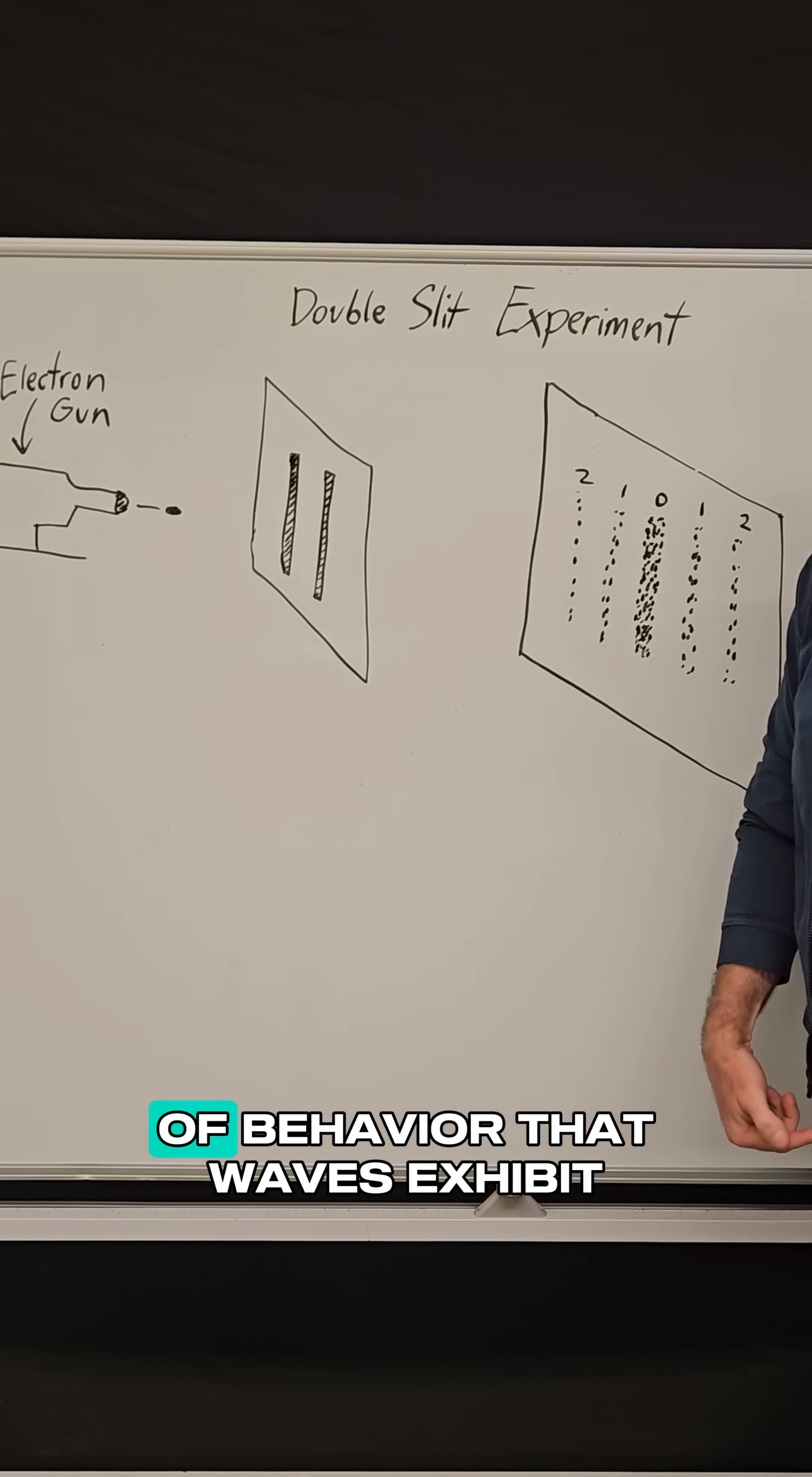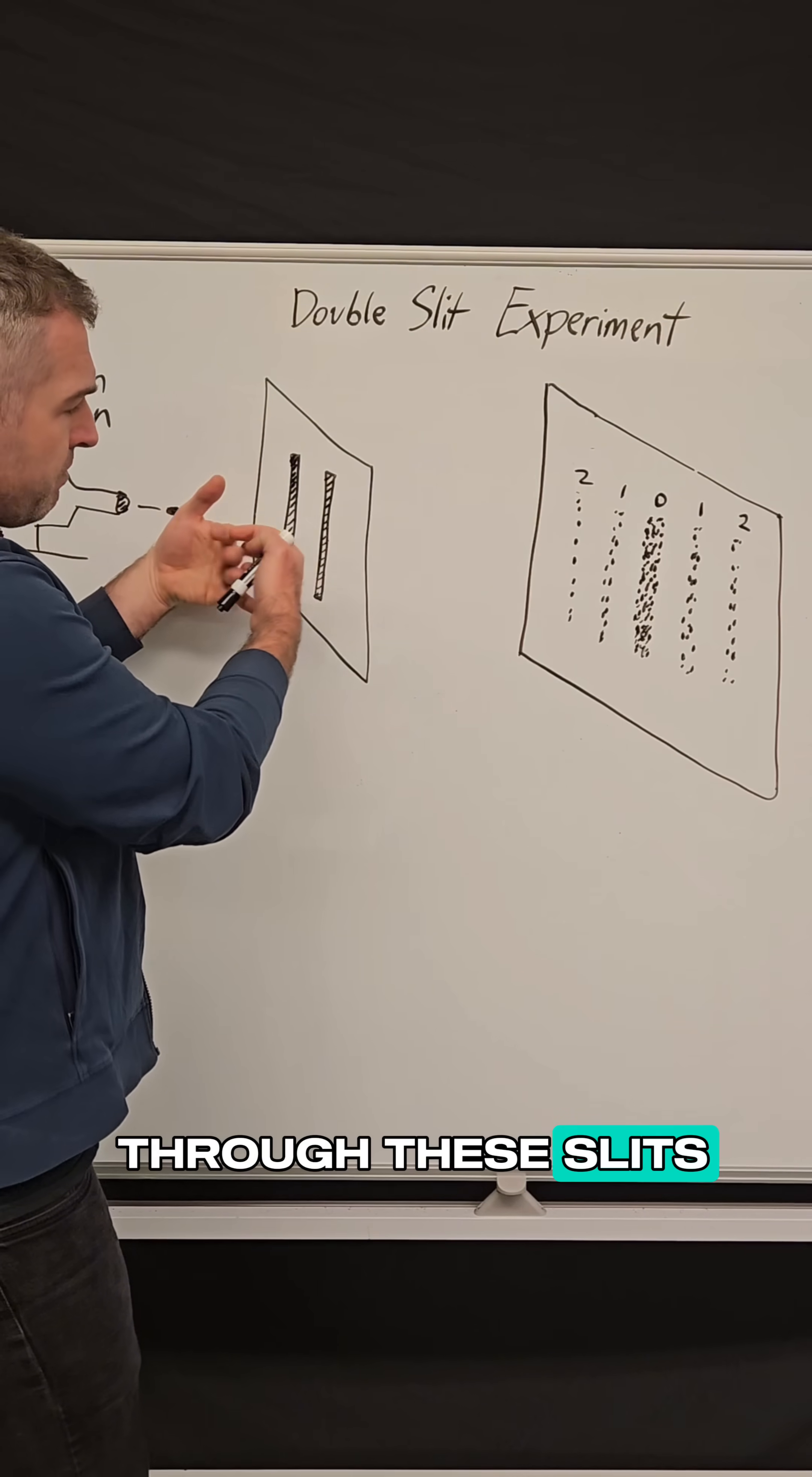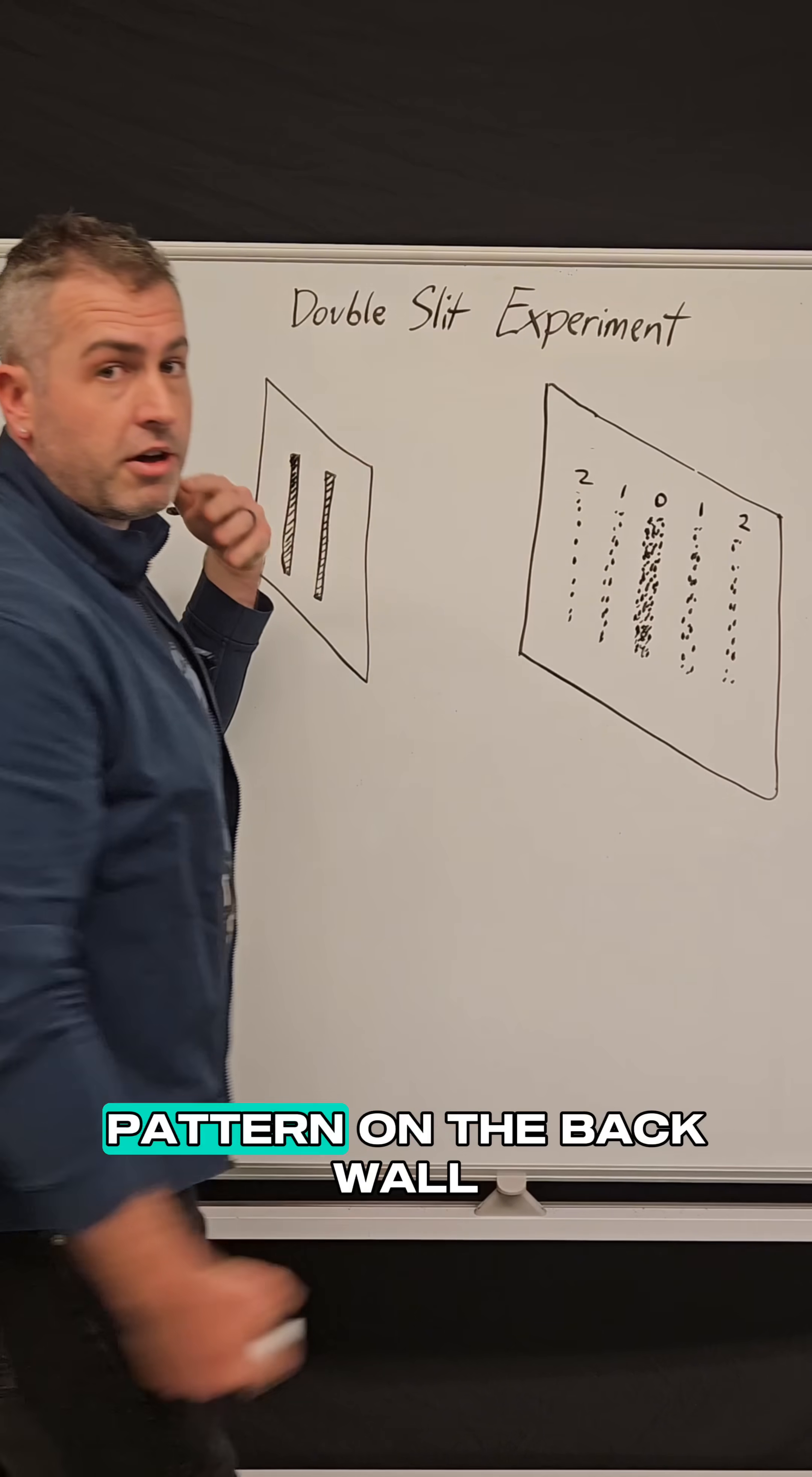And that's very weird because that's the kind of behavior that waves exhibit. If I were to push a water wave through these slits, it would exit and interfere with itself and create this interference pattern on the back wall.